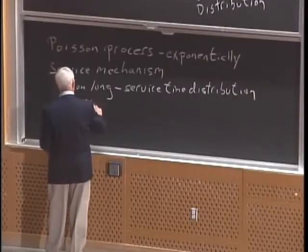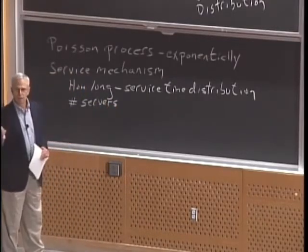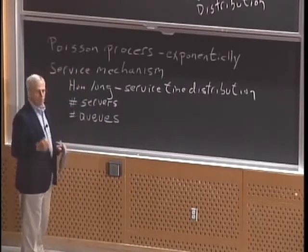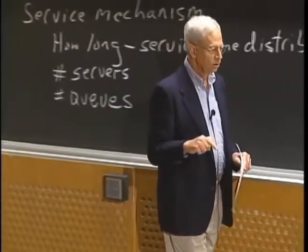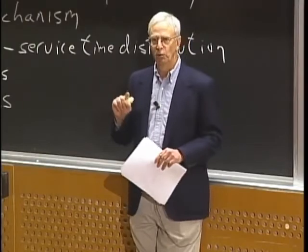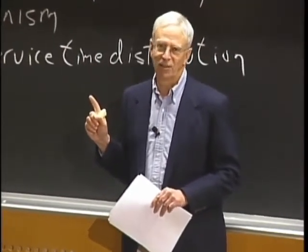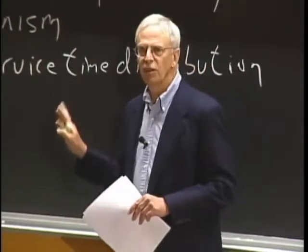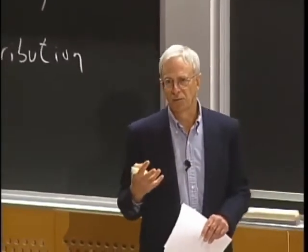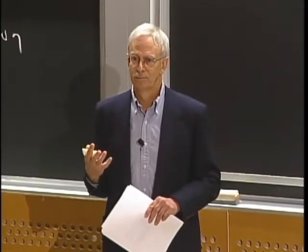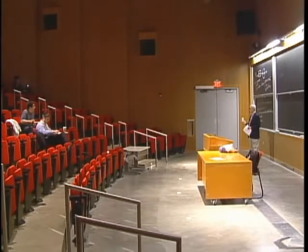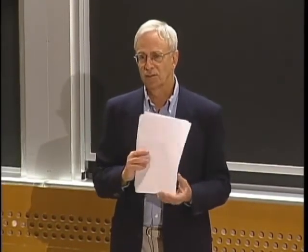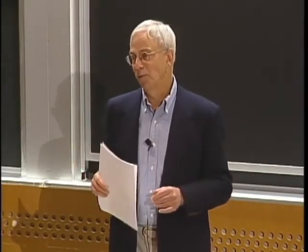The number of servers certainly matters. An important question is the number of queues — does each server have its own queue, as at a supermarket, or is there a single queue for many servers, as at airport security? A single queue is much better on average. It's easy to construct a proof why — which is why we now see them at banks and airports. Initially people didn't understand this was better and would have multiple queues. The reason we don't always use a single queue is space constraints.